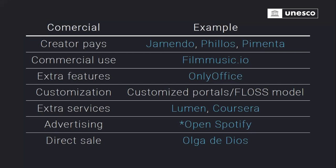Commercial models based on customization are incredibly successful in free and open software and editorial publishing — you get a base text or course for free and pay for customization such as institutional branding, plugins, content translation, or specific features. You can also pay for extra services, as consolidated by big OER platforms like Lumen and Coursera, where content is available openly but users pay for data analytics or certification — a model that has been around for quite a long time.